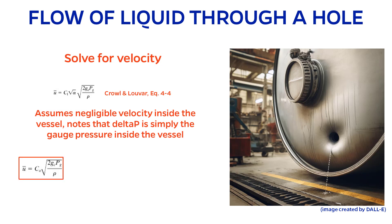Multiplying C1 by the square root of alpha seems a bit clunky, so let's just replace that with a new discharge coefficient, C0. Now that we have an expression for the velocity, we can multiply by the area of the hole to obtain the flow rate.